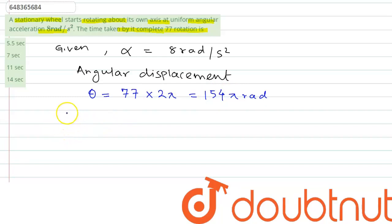Now angular acceleration is given 8 pi radians per second.